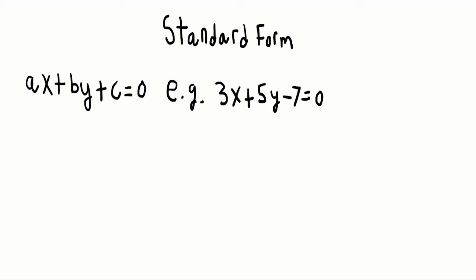Before we go ahead and start converting standard form to Y equals MX plus B, and Y equals MX plus B to standard form, we have to look at A, B, and C — these three variables — because they have some restrictions. Let's start off with A.